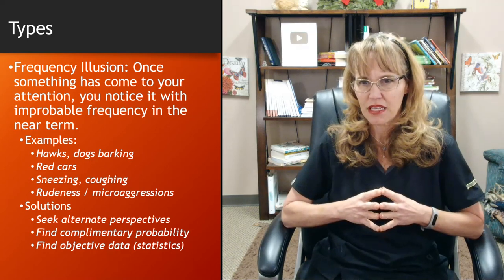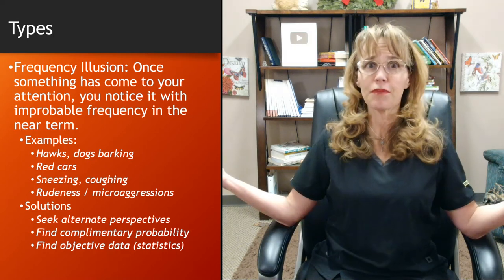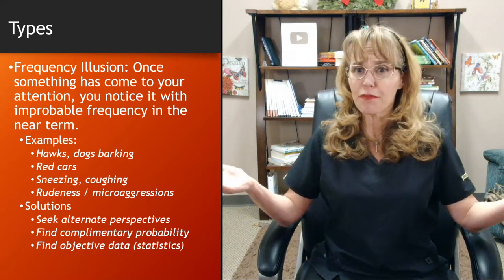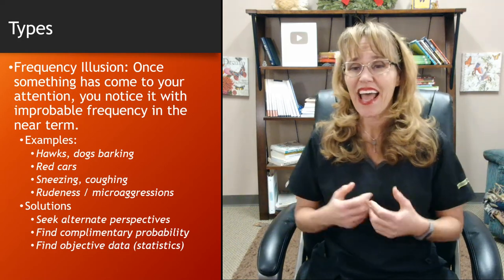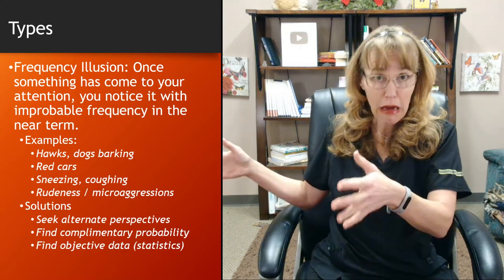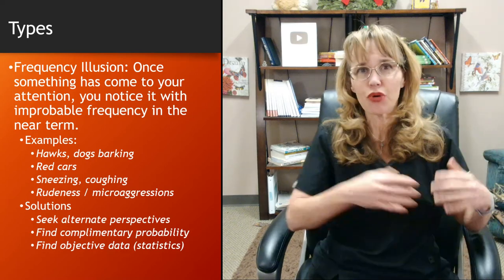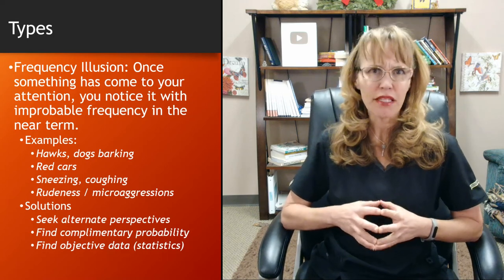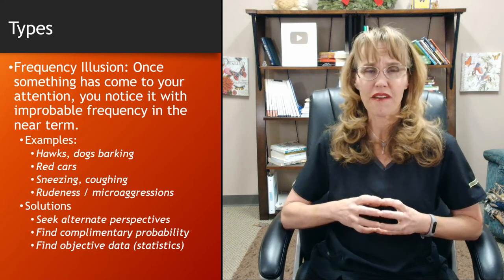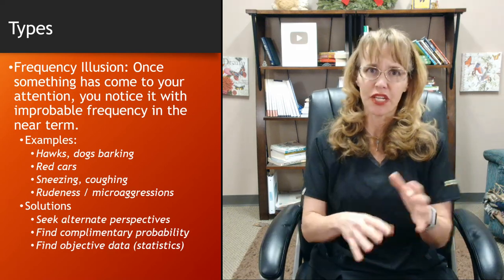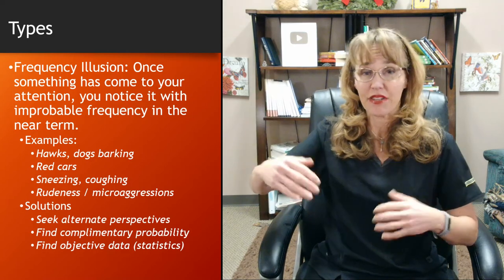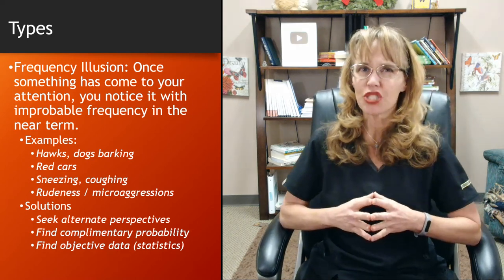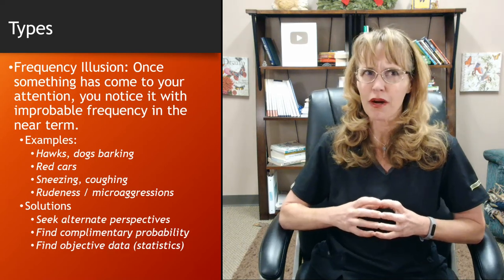It's a way of training your mind to recognize that it's paying more attention to one thing because it noticed it recently. Also find objective data or statistics — how many people actually drive red cars versus blue cars versus yellow cars? How many people are sick right now? There are times like flu season when people will be sneezing and coughing more, so you can check the data: is it all in my head or are people actually sneezing and coughing more often? My weather app even tells you the flu level in your area — high, moderate, or low — so that's one place to get objective data.